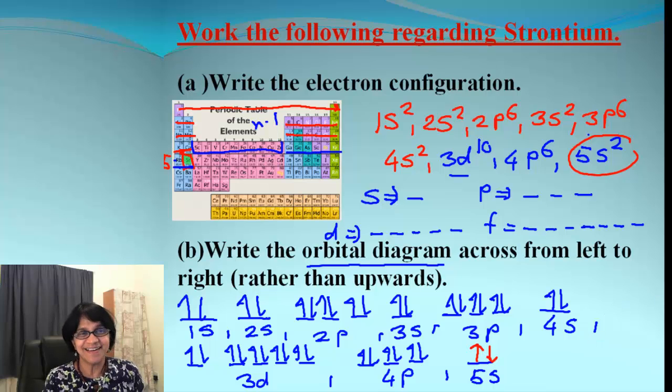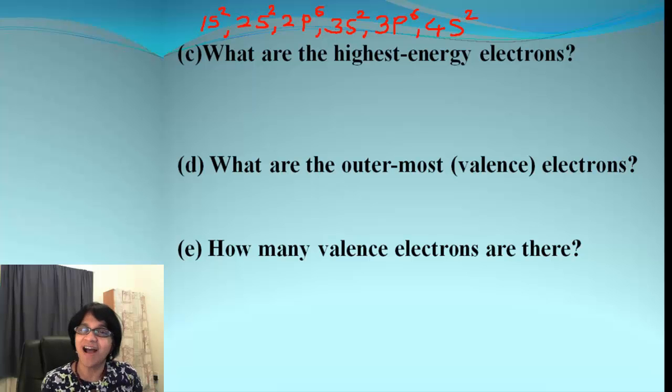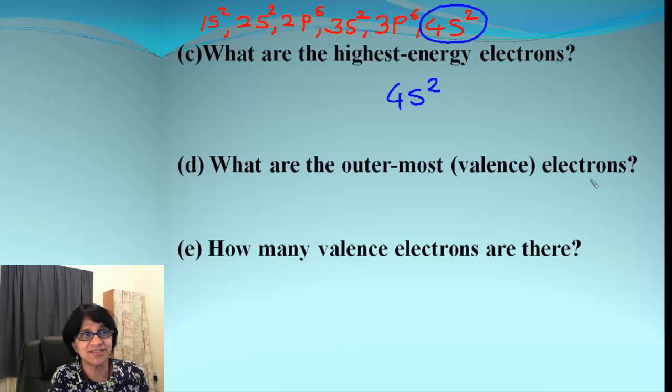Moving on, what are the highest energy level electrons for strontium? This is what we got as electron configuration for strontium. The highest energy levels are the one which we end up with. So, what we are ending up with is 5s². So, that's what it is for highest energy electrons.